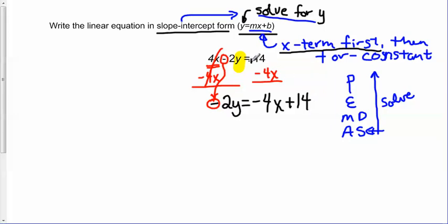I still have these two terms. That 14 was a positive 14, that's a negative 4x. Because they're not like terms, I can rearrange them however I want to, just so long as I'm sure that I keep track of my signs. Because that's a negative 4x, I want to be sure that that negative is there as well.